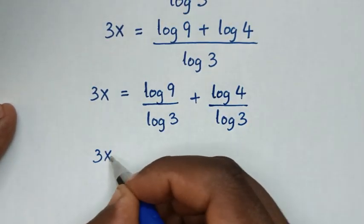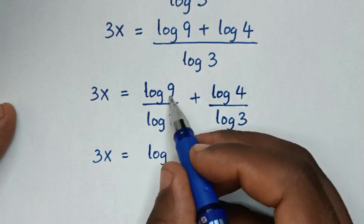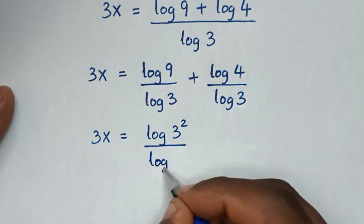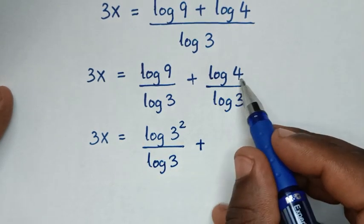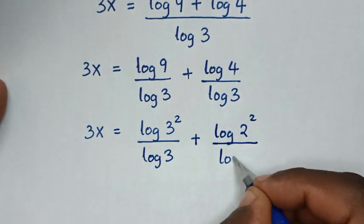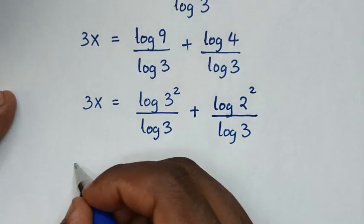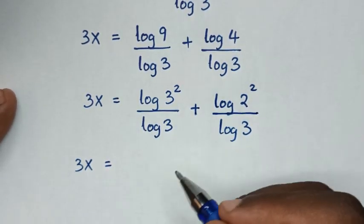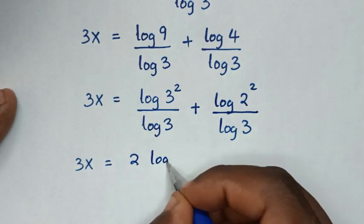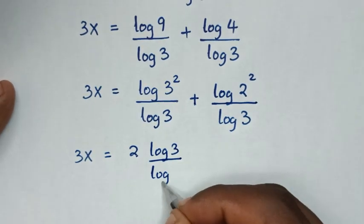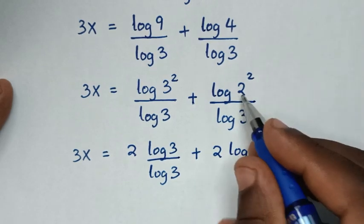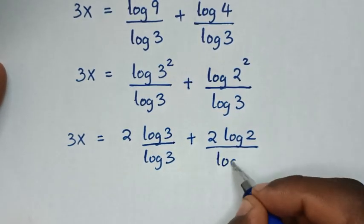Then it will be 3x is equal to log of 9 over log of 3, where 9 is 3 squared, so the power 2 moves to the base giving 2 log of 3 over log of 3. Plus log of 4, which is 2 squared, so the power 2 moves giving 2 log of 2 over log of 3.